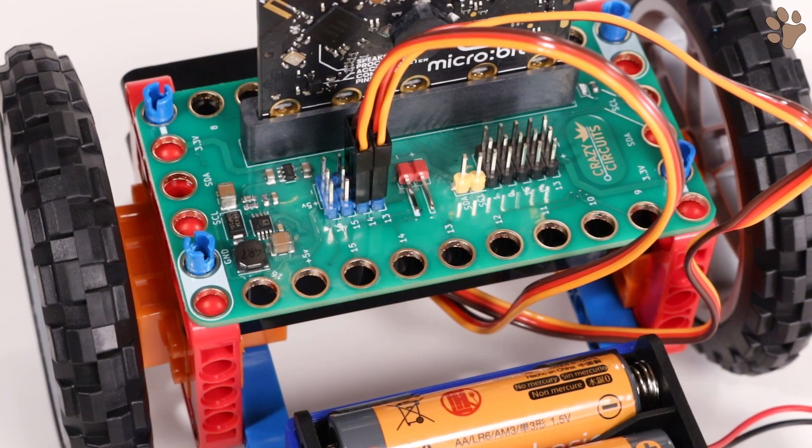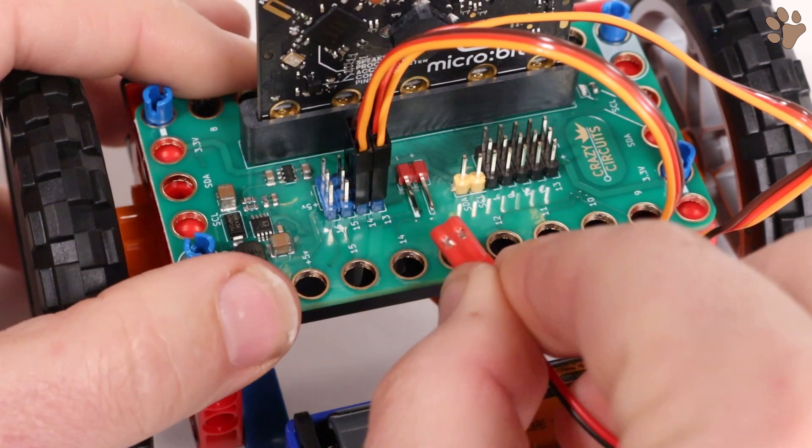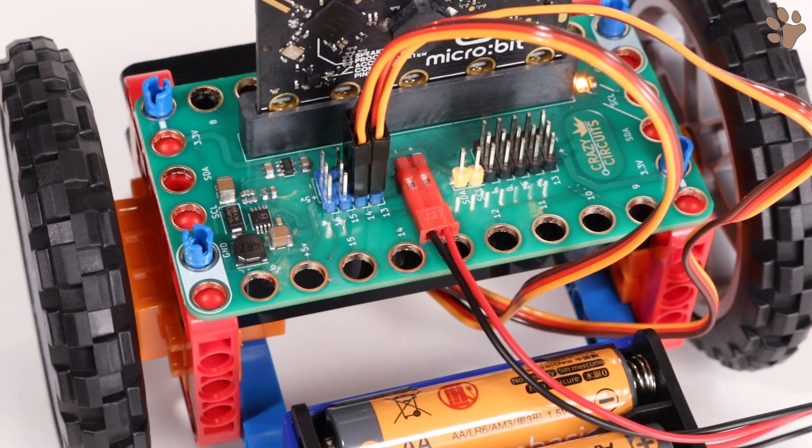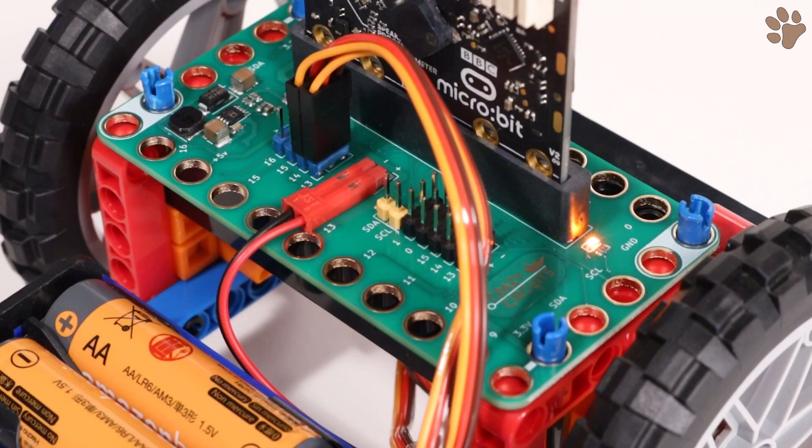The last connection to make is the battery pack. Make sure that the red wire of the battery pack goes to the plus symbol on the bit board. Now is a great time to double check your wiring. Make sure of the correct orientation on the servo wires and the polarity on the battery pack connector.